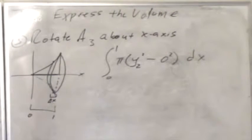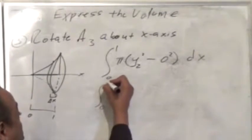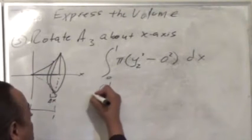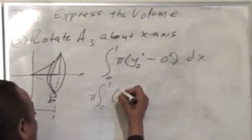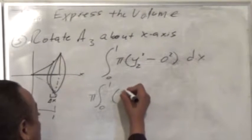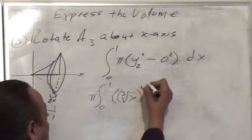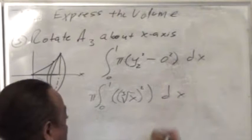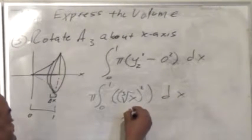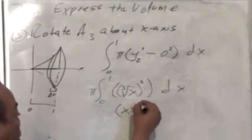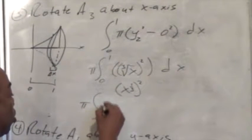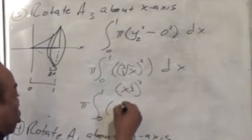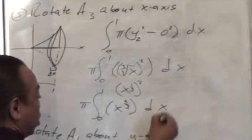So let's simplify this and place in y2. This becomes x to the one-third raised to the second power, so we're taking the antiderivative of x to the two-thirds power dx.